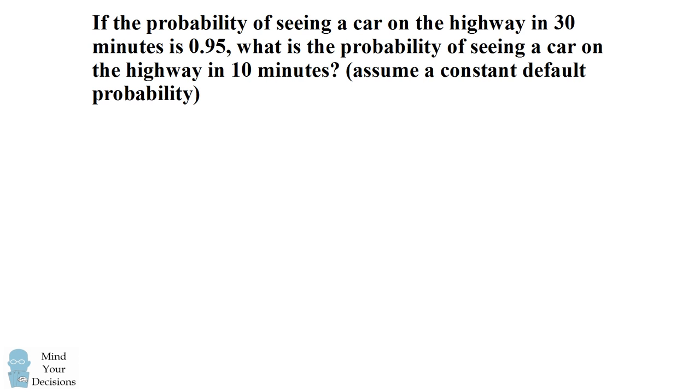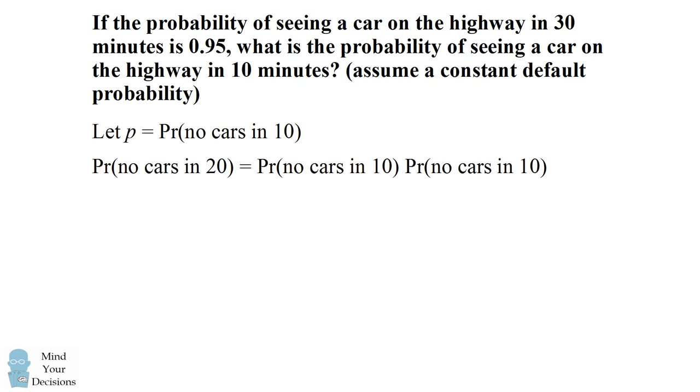We'll get started by writing p as equaling the probability of seeing no cars in 10 minutes. What is the probability of seeing no cars in 20 minutes? This is the probability of seeing no cars in 10 minutes, followed by another event of seeing no cars in 10 minutes.